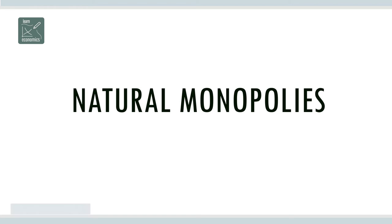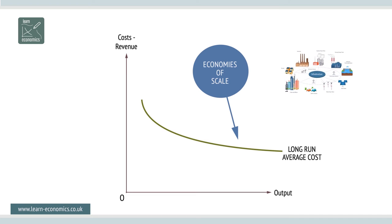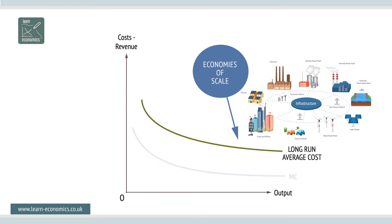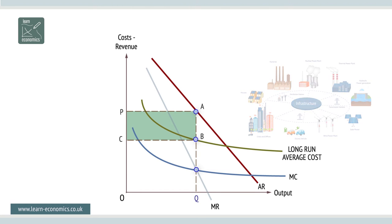Natural monopolies face large and continuous economies of scale. They are characterized by high fixed costs of supply, including large-scale infrastructure such as cables, pipelines, and networks. If unregulated, they can make excessive supernormal profits, but because they often supply essential public utilities such as water and electricity, they may operate against the public's interest.